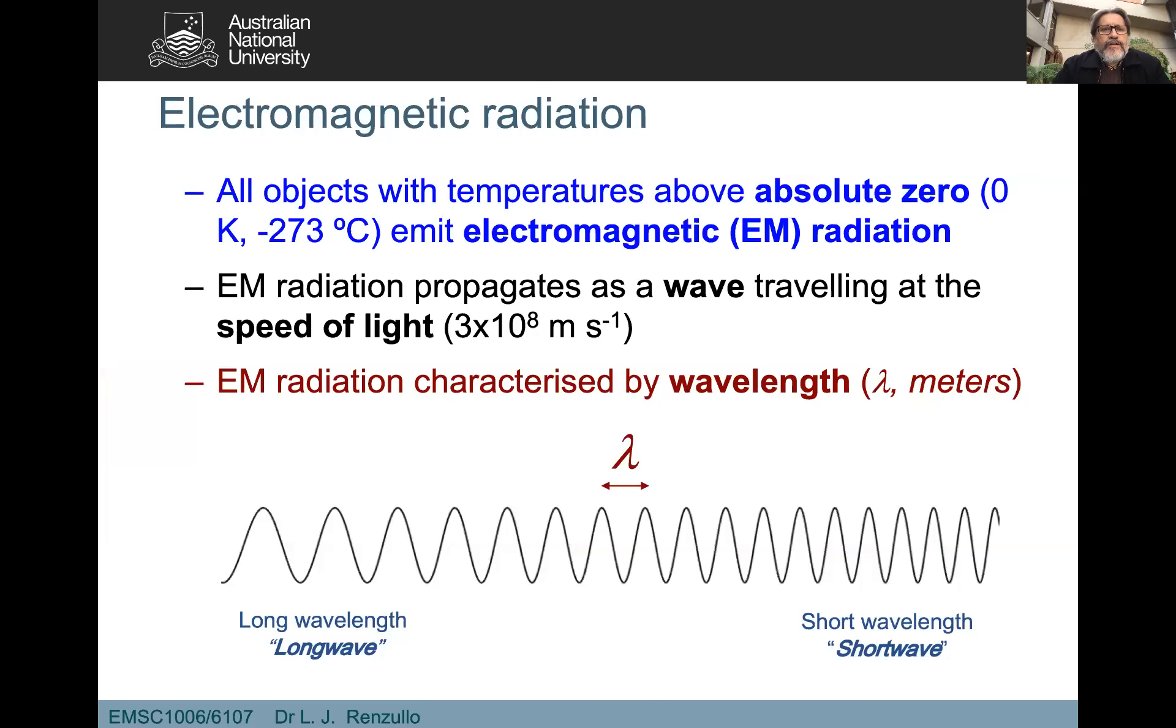So we'll talk a lot about electromagnetic radiation. Anything that is above absolute zero in temperature—that's minus 273 degrees Kelvin—emits electromagnetic radiation. EM radiation propagates in the form of waves traveling at the speed of light, the fastest speed there is: 300,000 kilometers per second. Electromagnetic radiation is characterized by wavelength. We can talk about long wavelength and short wavelength radiation, where the distance between the crests varies.